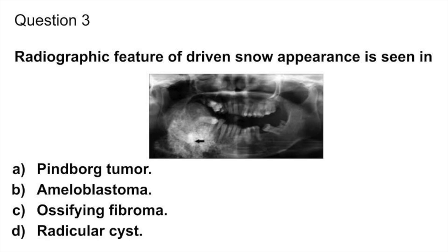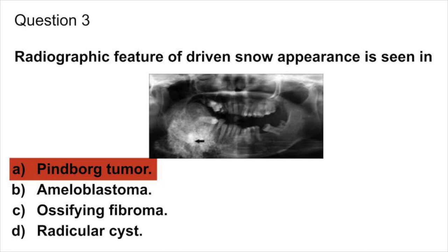Question 3. The radiographic feature of driven snow appearance is seen in: Pindborg tumor, ameloblastoma, ossifying fibroma, or radicular cyst? Answer: Pindborg tumor. Pindborg tumor, also known as calcifying epithelial odontogenic tumor, arises from cells of the stratum intermedium or reduced enamel epithelium. Liesegang rings are found, formed by amyloid-like material. The radiographic feature is driven snow appearance. Answer: Pindborg tumor.